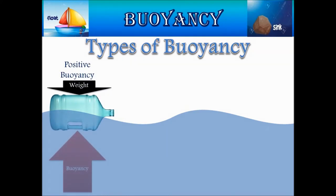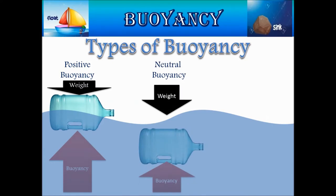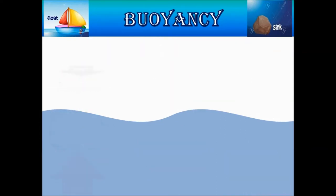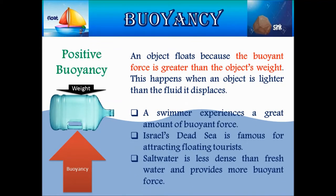Positive buoyancy occurs when the weight of the object is less than the buoyant force. An object floats because the buoyant force is greater than the object's weight. This happens when an object is lighter than the fluid it displaces. Some examples of positive buoyancy are: a swimmer experiences a great amount of buoyant force, and Israel's Dead Sea is famous for attracting floating tourists, as salt water is denser than fresh water and provides more buoyant force.